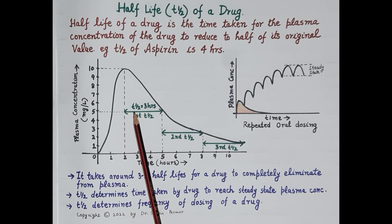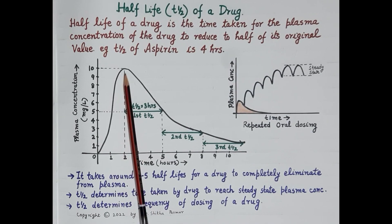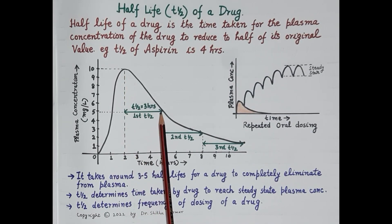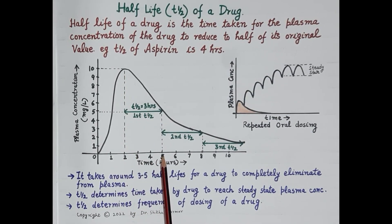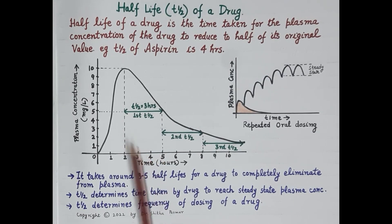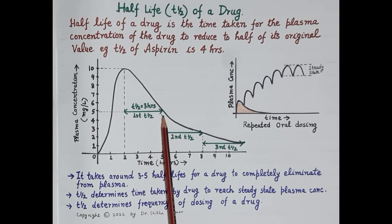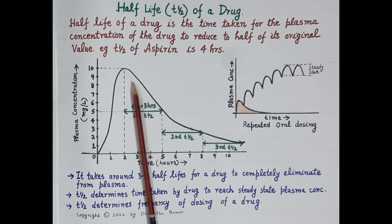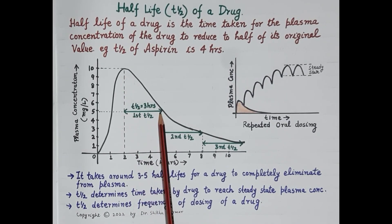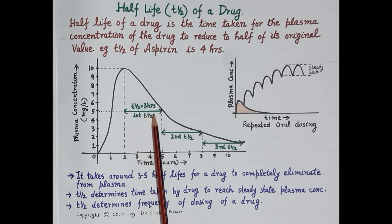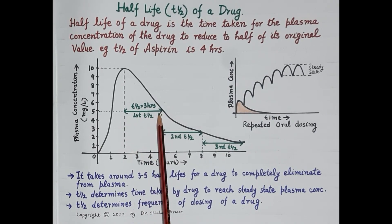It is represented as T-half. It took three hours for the plasma concentration of the drug to fall from 10 milligrams per liter to 5 milligrams per liter — that is half of the original plasma concentration. Therefore, the half-life of the drug is three hours.